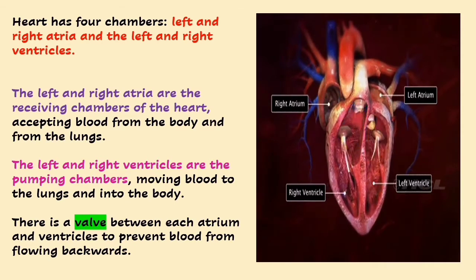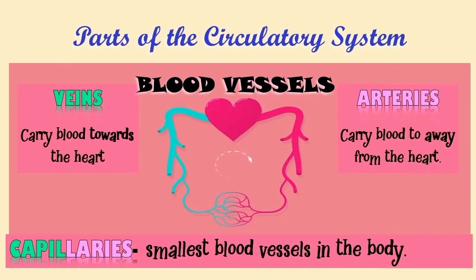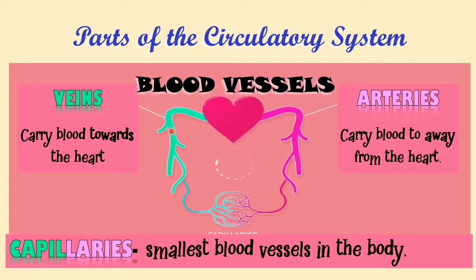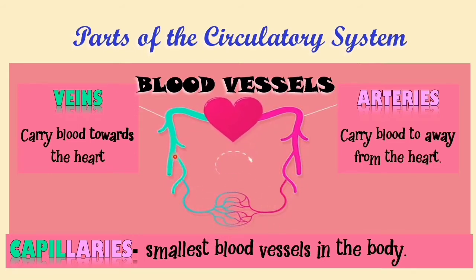The next major part of the circulatory system is the blood vessels. Blood vessels carry the blood throughout the body. There are three types of blood vessels: the veins, the arteries, and the capillaries.